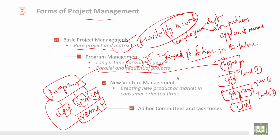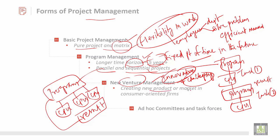The next form is venture management, which is very important. Venture management talks about innovative and challenging practices — innovative meaning new, and challenging meaning creating new products in the market. It focuses on customer-oriented firms, emphasizing skills, technology, and managing rapid growth in business.